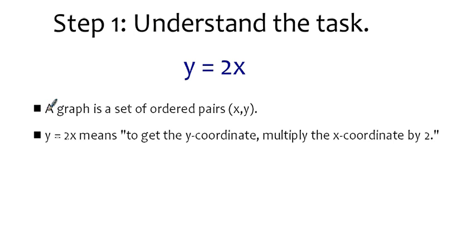In general, a graph is just a set of ordered pairs. To graph this equation, we're told that to get the y coordinate, we must multiply the x coordinate by 2. That's what this formula is telling us.